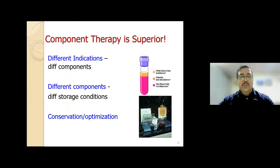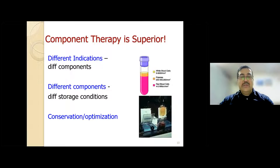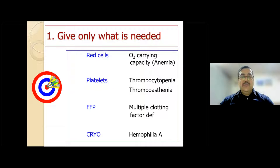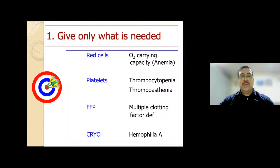Why is component therapy superior to whole blood therapy? There are three reasons. First, different indications require different components: anemia requires red cells, low platelet count or platelet dysfunction requires platelets, multiple clotting factor deficiency requires plasma, and Hemophilia A requires cryoprecipitate. Whole blood, which lacks functional platelets and labile clotting factors, only works for anemia and not the other indications. Second, different components require different optimum storage conditions.